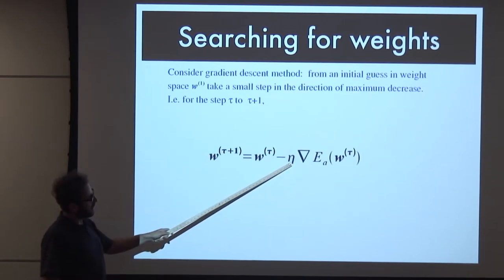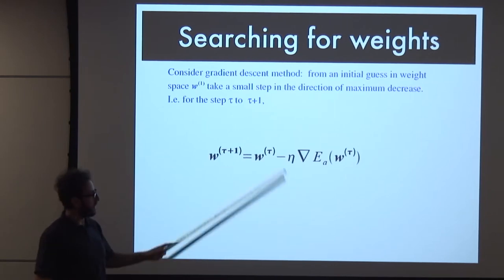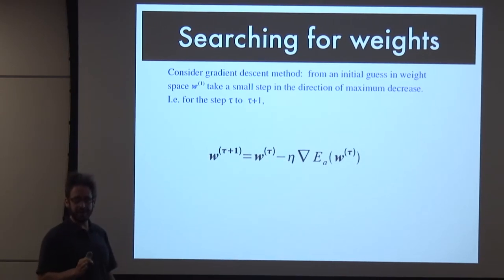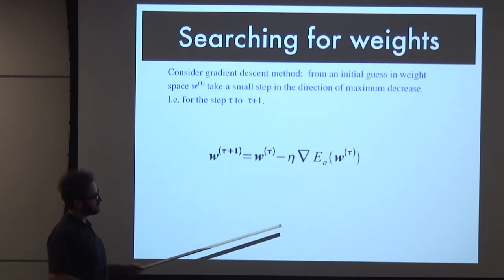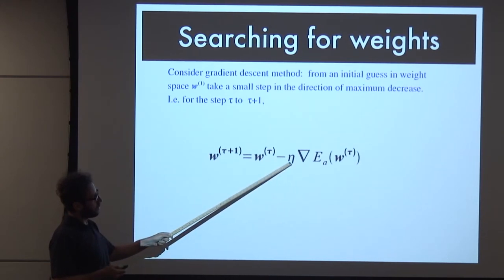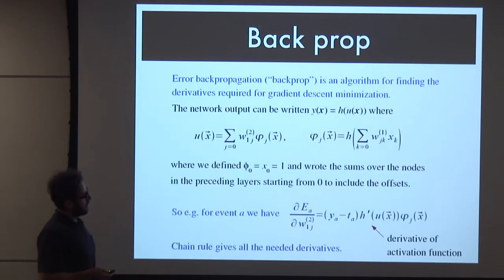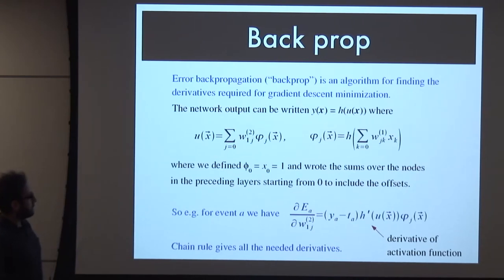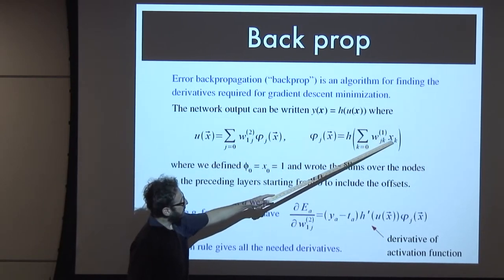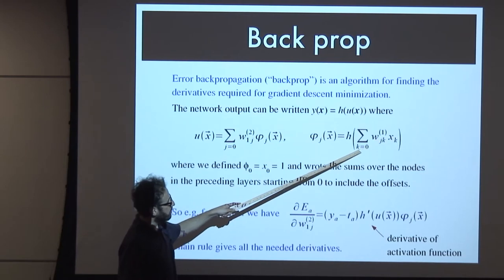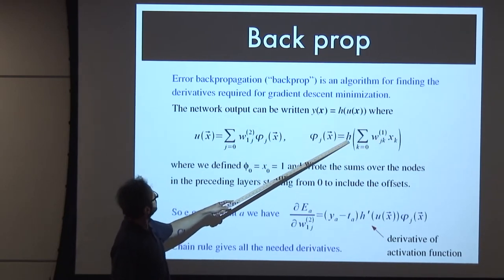Eta - the learning rate - tells you how far to move in that direction before we evaluate. If eta is very small, you say this way is uphill, I'm going to take a tiny step. If eta is large, you take a huge step in the direction of steepest ascent. If we define our whole function - we have the inputs, we weight them, sum over them, and pass to the activation function - the output can be written as H(U), and we can take the derivative with respect to the weights.